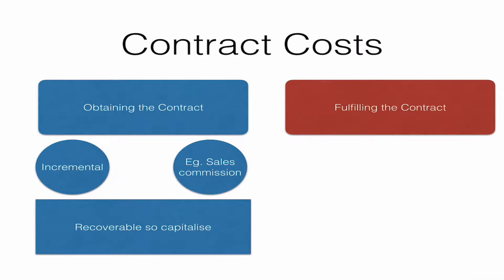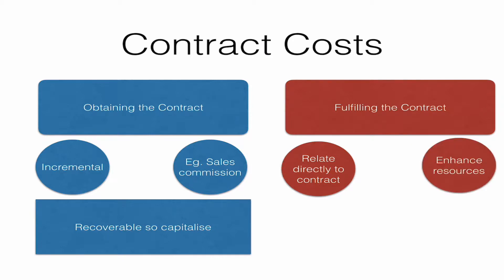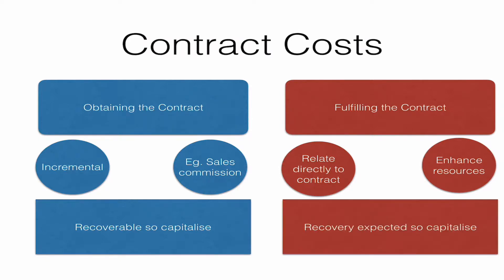Now let's look at the cost of fulfilling the contract. It must fall within the scope of IFRS 15 — it can't be IAS 2 inventories, IAS 16 PPE, or IAS 38 intangible assets. Also, the cost must relate directly to the contract being fulfilled, and it must enhance the resources you're going to use to satisfy your promises. They must also be expected to be recovered, and because they are, they can be capitalised.